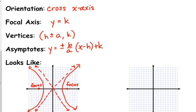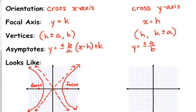Now, if the y comes first and the x is negative, then it's going to cross the y axis. So the focal axis is going to be x equals h. Your vertices are going to be h and k plus or minus a. Your asymptotes are a over b times x minus h plus k.